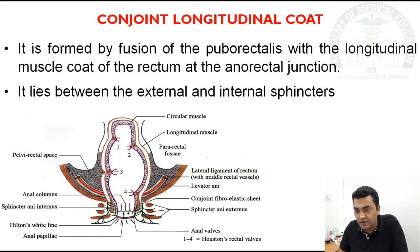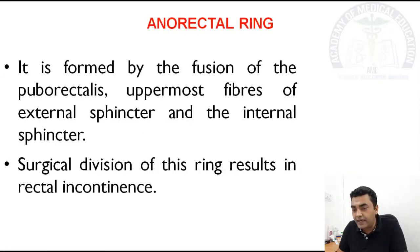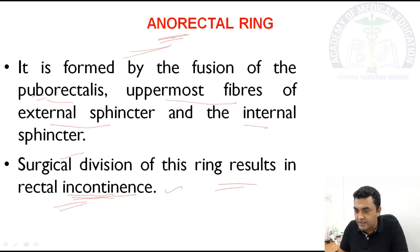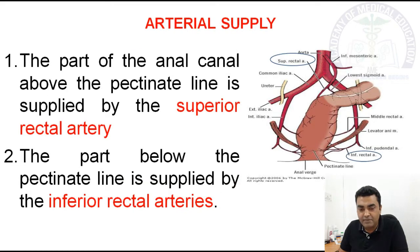The conjoint longitudinal cord is formed by fusion of the puborectalis with the longitudinal muscle cord of the rectum at the anorectal junction. It lies between the external and internal sphincters. The anorectal ring is formed by fusion of the puborectalis, the uppermost fibres of the external sphincter, and the internal sphincter. Surgical division of this ring results in rectal incontinence — this is an important clinical anatomy point.